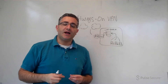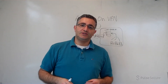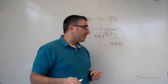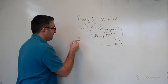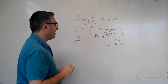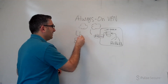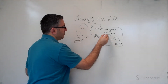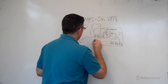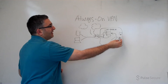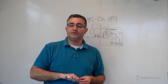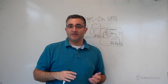Typically, highly regulated industries like financial or federal want to make sure that everything goes through the stack. So when somebody is outside — on a mobile device or on a laptop — they want that traffic to come in, go through the stack, and then go out. If there are any protected internal resources, they want the traffic to come in, go through, and go out. For corporate-owned devices, they can enforce this Always On VPN so the behavior is very similar to being on-prem.